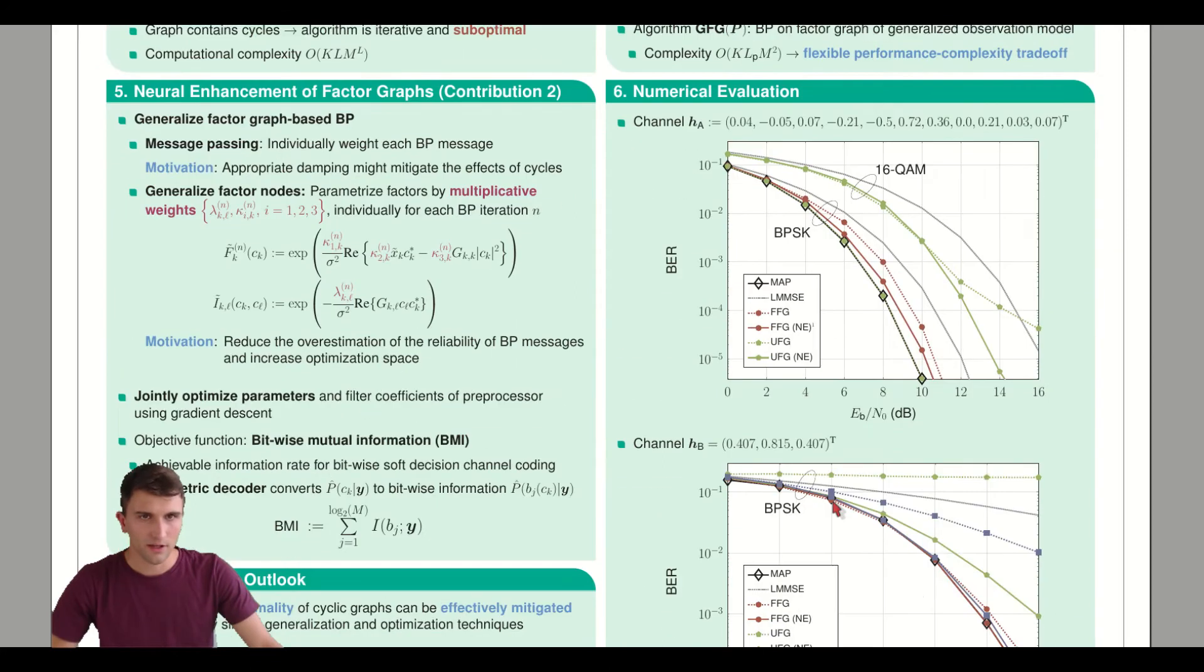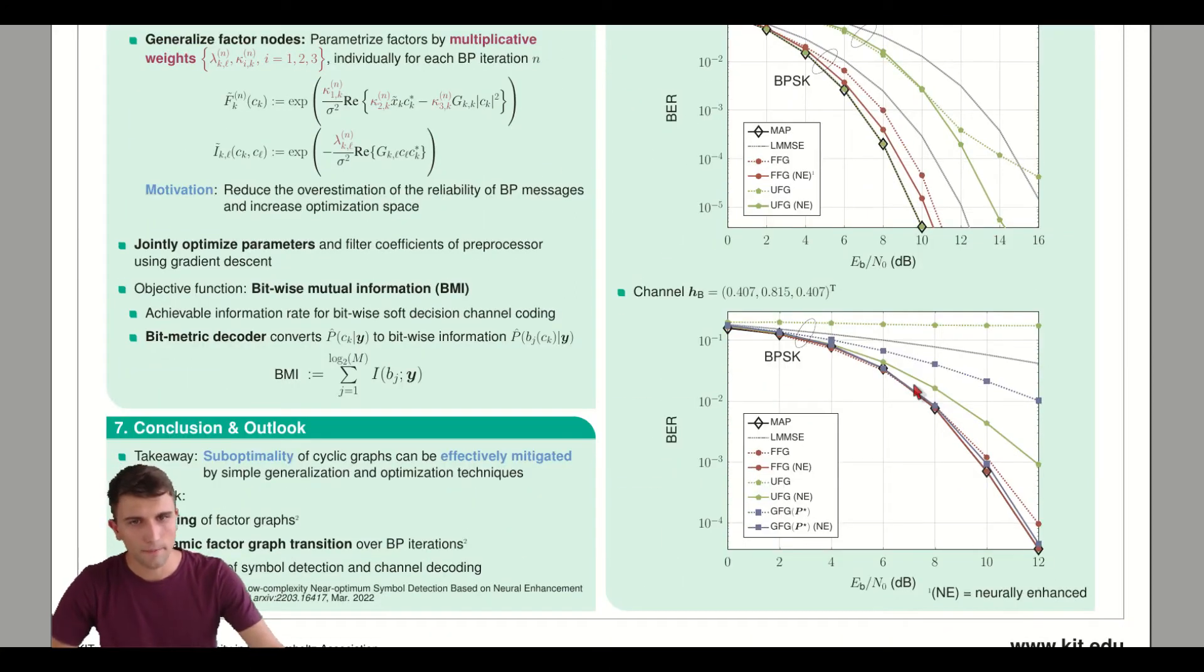Let's look at this generalized model for channel HB. By choosing an appropriate preprocessor, we can already quite improve the performance compared to the Ungerberg observation model. In this case the preprocessor had a channel impulse response length of 5, compared to the matched filter length of 3. We can already improve quite a lot only by changing the observation model.